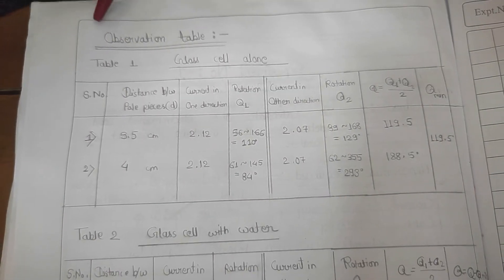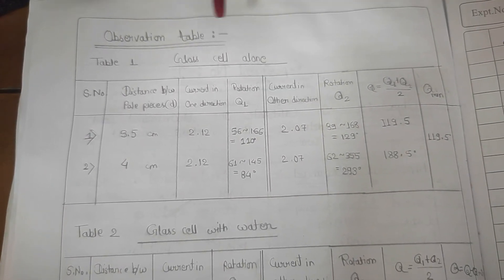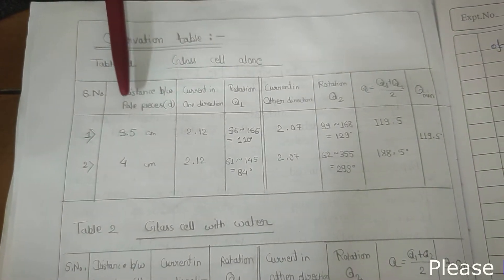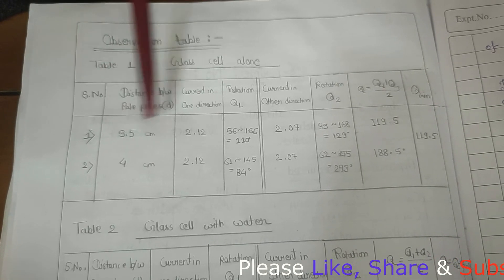Now we will come to the observation table. First we will take the distance between pole pieces. First we have taken the Vernier caliper. This was 3.5 cm.